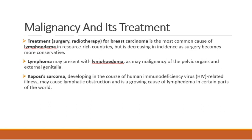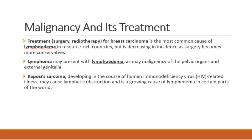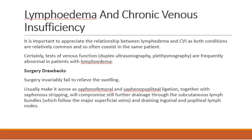Malignancy and its treatment — such as carcinoma breast treated with surgery or radiotherapy — leads to lymphedema, also known as Stewart-Treves lymphangiosarcoma. Lymphoma can also present with lymphedema, and Kaposi sarcoma is common in HIV patients. Trauma leads to secondary lymphedema through a multifactorial etiology including disuse, venous thrombosis, and lymphatic injury or destruction. Degloving injuries and burns are particularly likely to disrupt dermal lymphatics; if there is tenosynovitis and bursitis, this can be associated with localized subcutaneous lymphedema causing troublesome persistent swelling following ankle and wrist sprains.